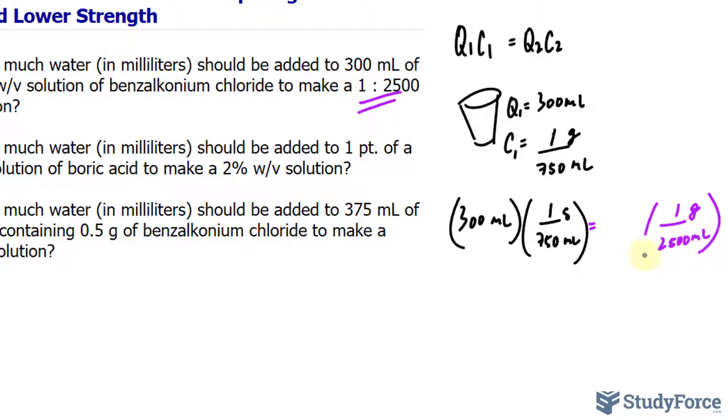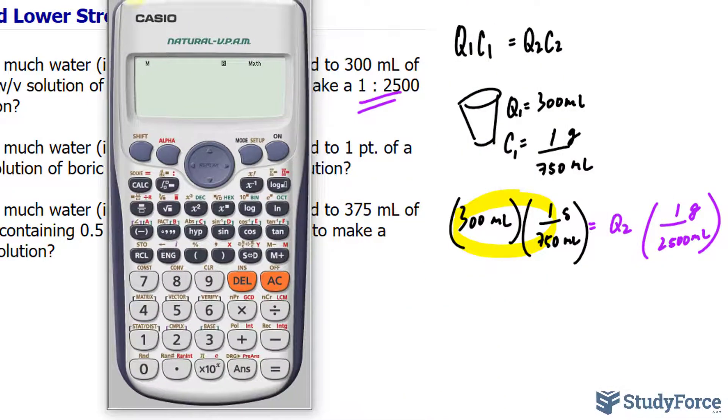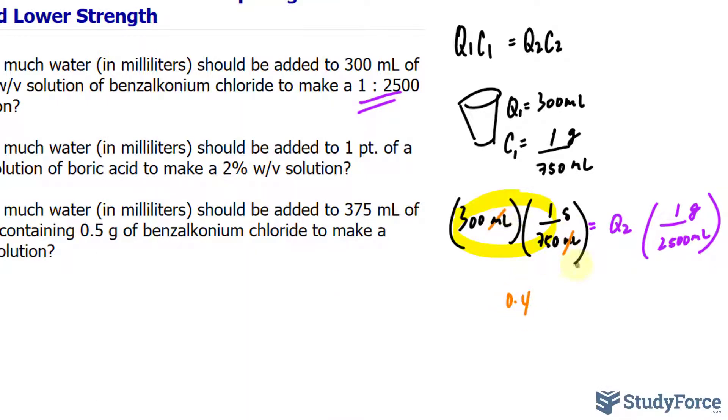So we don't know the quantity of the solution and we'll find that out because that holds important information for us to actually find out the amount of diluent we need. Let's solve for Q2 or the quantity of the solution they want us to prepare. And to do that we multiply these two values out. So if you have a scientific calculator, it really helps. 300 times 1 over 750, you end up with 0.4. So 0.4, notice how the units cancel out the milliliters, so we have 0.4 grams.